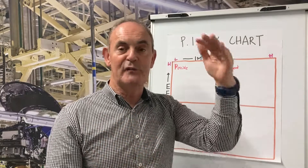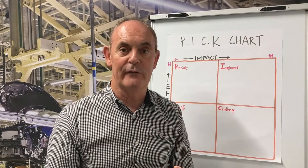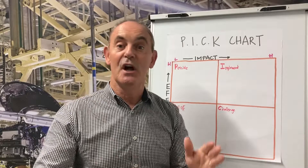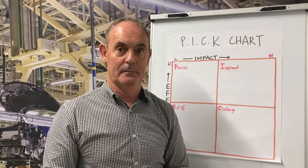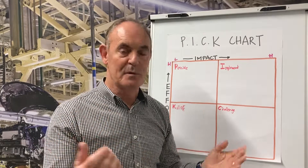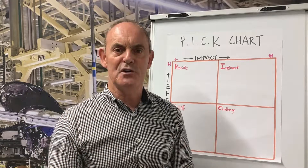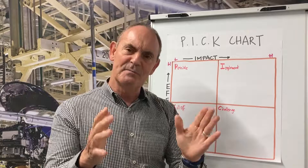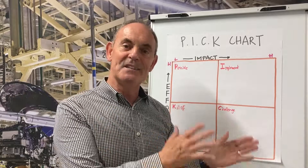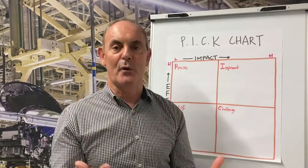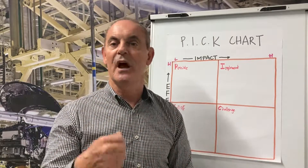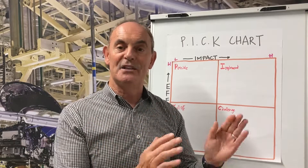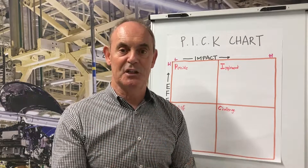For example, in brainstorming, when you've generated a whole lot of ideas, a PICK Chart will help you to prioritize those ideas to arrive at the best outcome. It can be used in problem solving, in project work — in fact, in a whole lot of different applications. But just be aware, it is a subjective tool that can be prone to influence and bias for individuals. If you want a more objective tool, try a solution selection matrix.